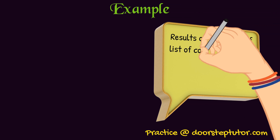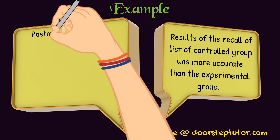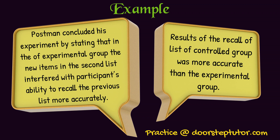What Postman found was that the control group was more accurate, while the experimental group performed worse. This difference can be explained from a retroactive interference standpoint: the learning items in the second list interfered with the participants' ability to recall the first list. This is how interference theory was explained in a scientific and systematic manner, demonstrating retroactive interference through a lab experiment.